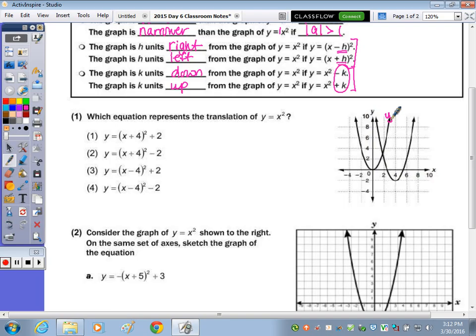So which expression represents the translation or the movement of that parabola? Here's y equals x squared, and we're trying to determine the equation for this parabola here. So how did we move? Let's take a look at the vertex. The vertex is right here at 0, 0, and now it's at 4, negative 2. So we went right 4, down 2.